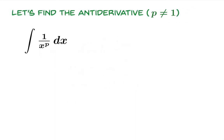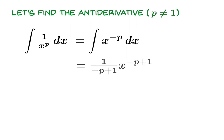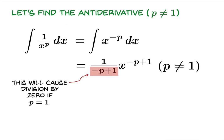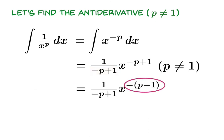Now let's find the antiderivative for the case where p is not equal to 1. We write 1 over x to the p as x to the negative p, then run the power rule in reverse. Here's the moment to appreciate why we need p not equal to 1: if p were actually equal to 1, we'd have a 0 in the denominator — that's where this hypothesis really kicks in. Negative p plus 1 is the opposite of p minus 1.